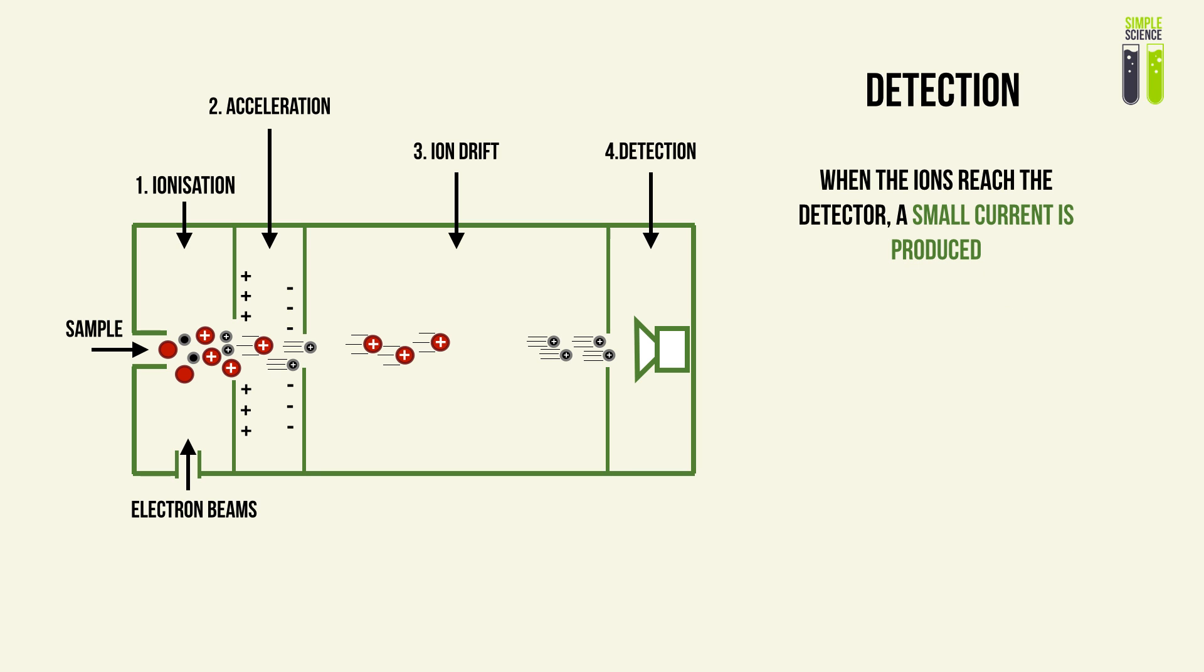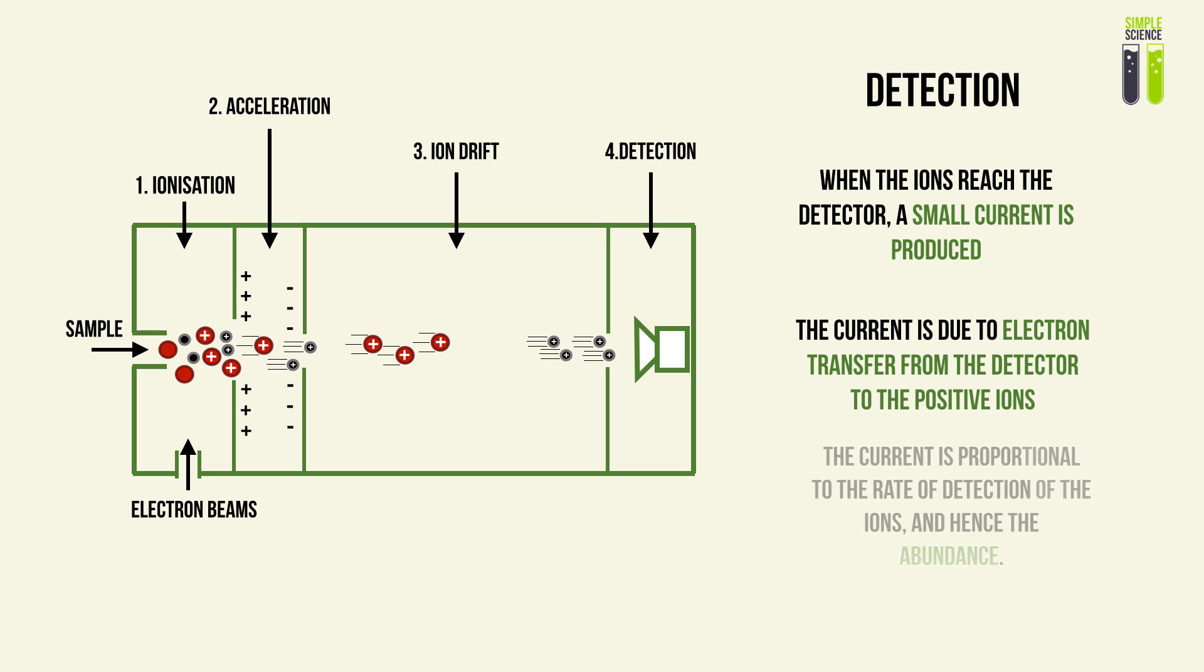Now you must find the abundance. When the ions reach the detector, a small current is produced each time an ion reaches the detector. This is because when an ion reaches the detector, electron transfer occurs. You can imagine contacting a charged particle with a neutral particle—there will be electron transfer from lower potential to higher potential.